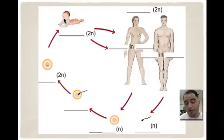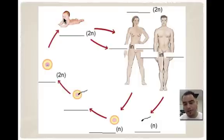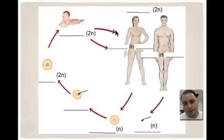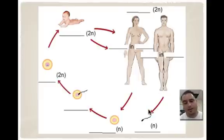Those cells start to differentiate, but they still have the same DNA. They have the same DNA but start turning into different cells because certain genes turn on — that's called gene expression. The baby continues to divide through mitosis until it becomes an adult, and then meiosis starts.